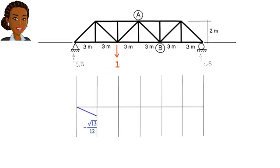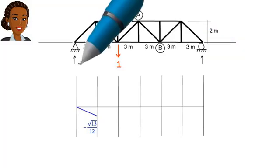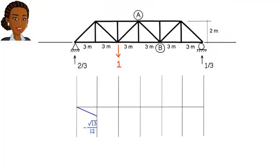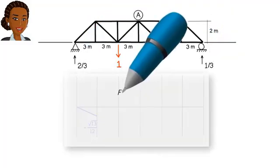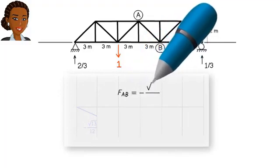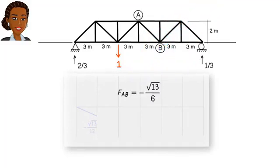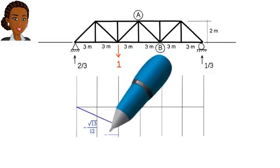Now we move the load to the next truss joint. We then calculate the resulting support reactions and determine the force in AB, just like the previous step. This time, we get negative square root of 13 divided by 6. We plot the point and connect it to the previous point using a straight line.